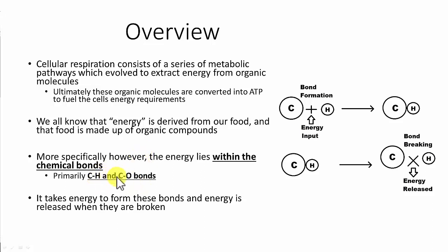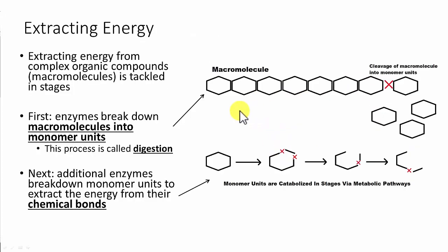Organic molecules are made up largely of carbon and hydrogen. Things like sugar and fat are largely made up of carbon, hydrogen, and oxygen. These bonds have lots of energy, so when we talk about extracting energy from our food, we're really talking about deriving the energy from the chemical bonds themselves — which is potential energy — and converting that ultimately into a form of kinetic energy. That's going to be done through several dozen reactions, which we're going to simplify and look at the most significant ones.